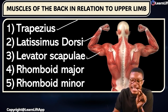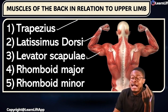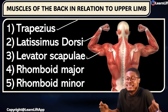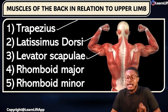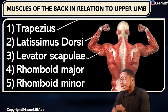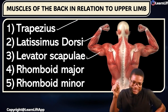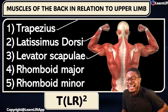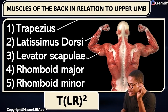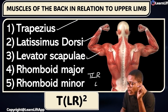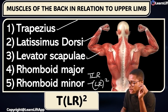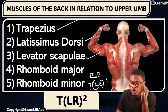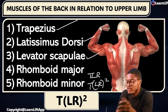These are the five muscles of the back in relation to the upper limb — not just muscles in the back, but muscles of the back that have a function with respect to the upper limb. To remember them easily, use the acronym T-L-R²: trapezius, latissimus dorsi, levator scapulae, rhomboid major, and rhomboid minor.